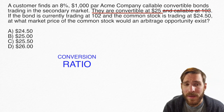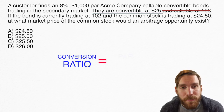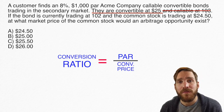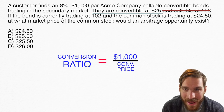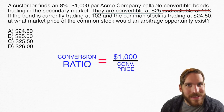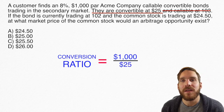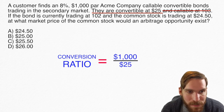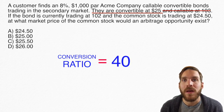They've given us the conversion price, and we need to get the conversion ratio. The formula is par divided by conversion price. We have both figures: $1,000 par and a $25 conversion price. We can safely assume $1,000 is par unless told otherwise. So $1,000 divided by $25 gives us a conversion ratio of 40. This bond, when converted, converts into 40 shares of common stock.